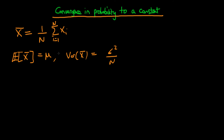If we take the limit of both sides as n tends to infinity, the right hand side goes to zero. So we've demonstrated mean square convergence, and we know that mean square convergence implies convergence in probability.